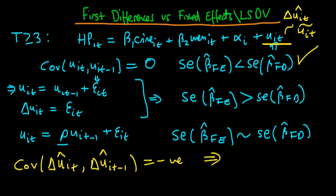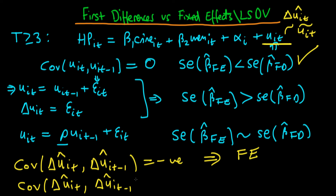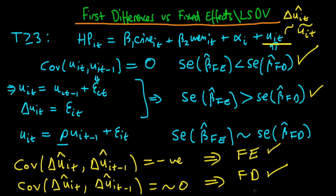If the covariance is negative and significant, we may be in the situation where fixed effects estimators are better. If the covariance between the estimated first-differenced error and its first lag is approximately zero, that is more indicative of the random walk situation, in which case we should use first differences estimation. And for all circumstances in between — because the real world isn't usually this clean — we should estimate the model via both fixed effects and first differences, hoping to find a degree of stability between the two types of estimator.